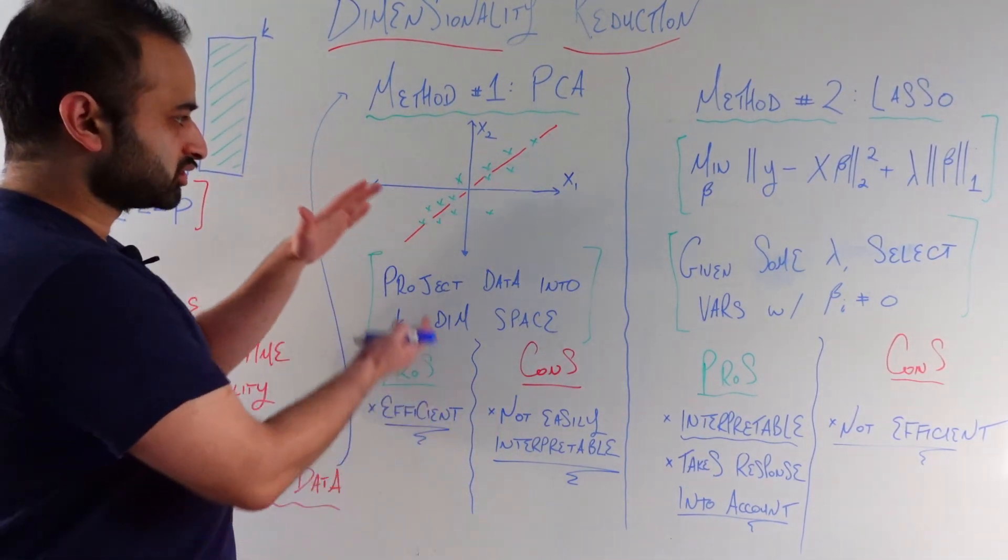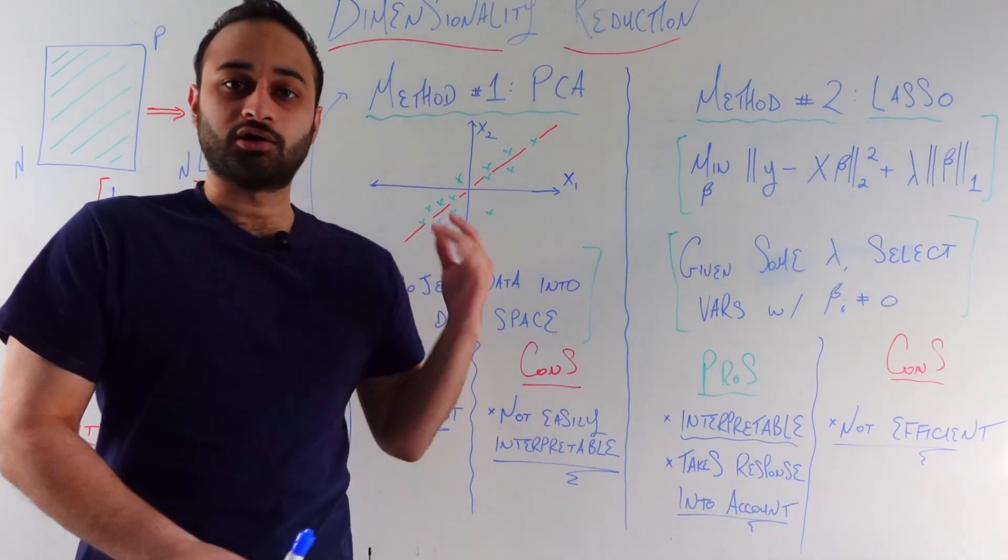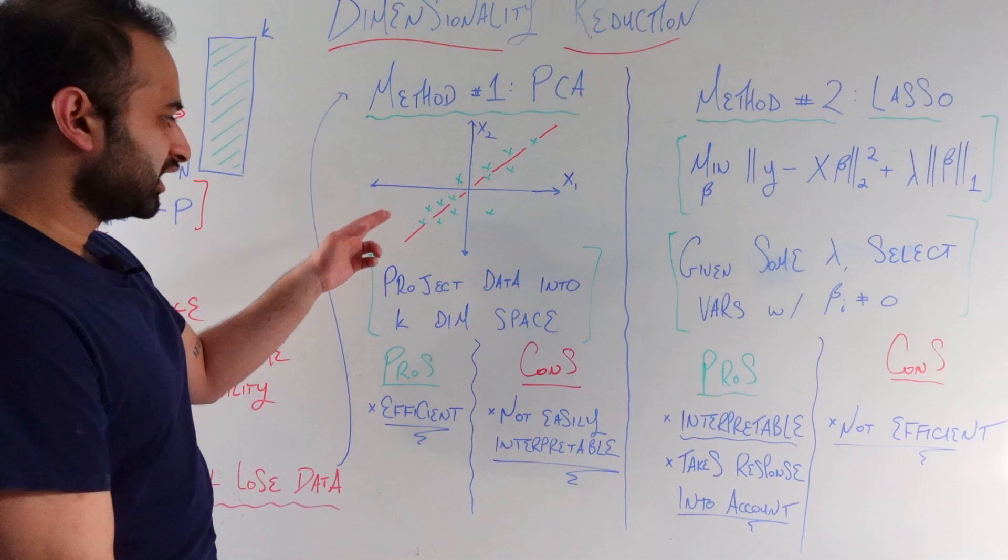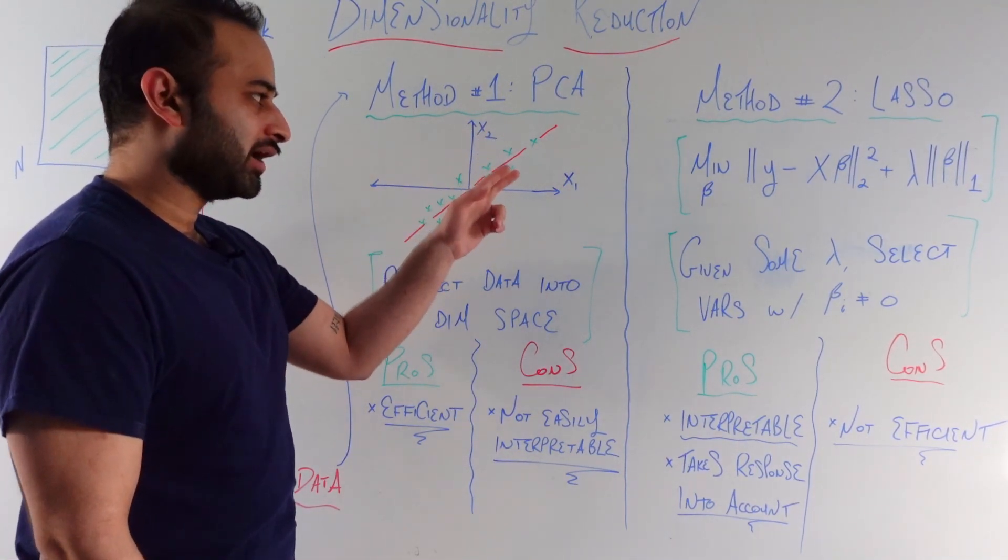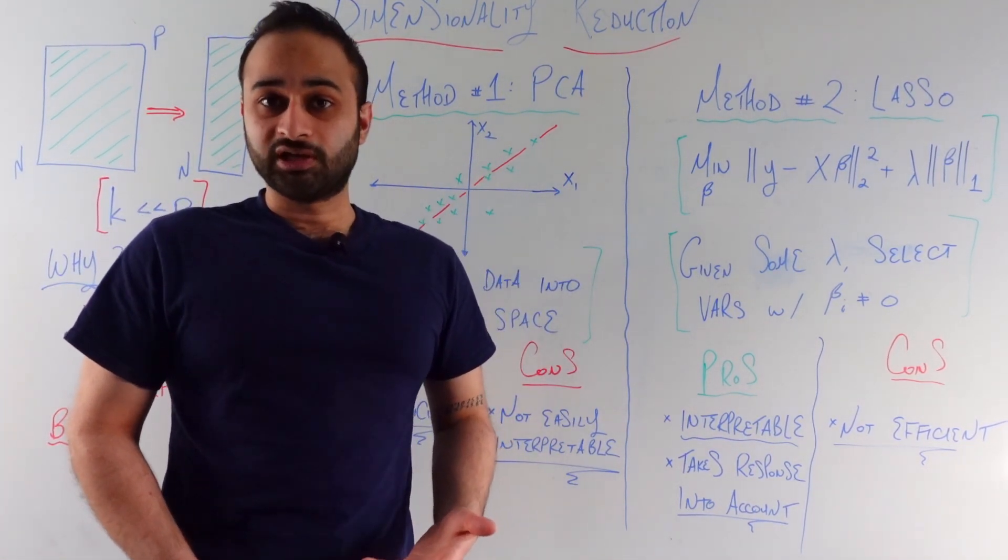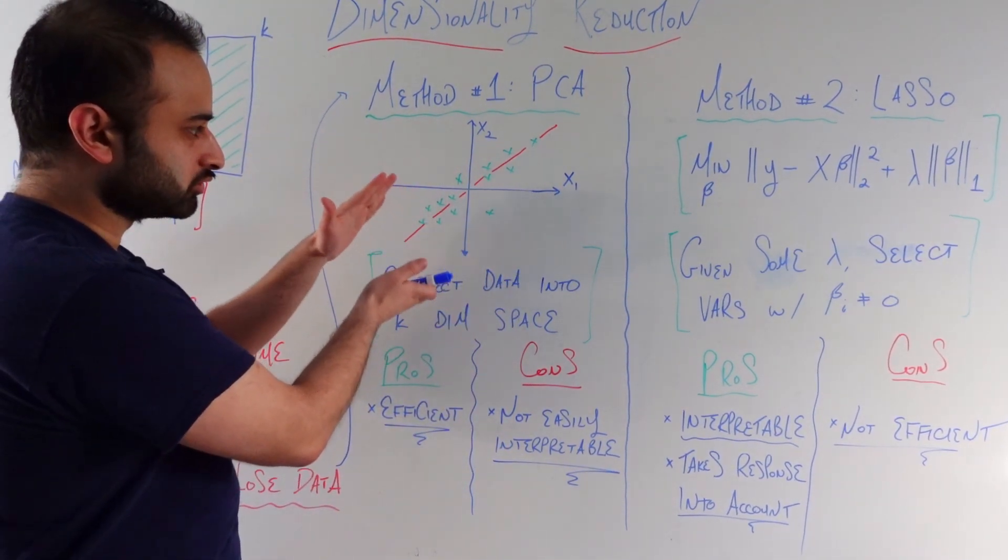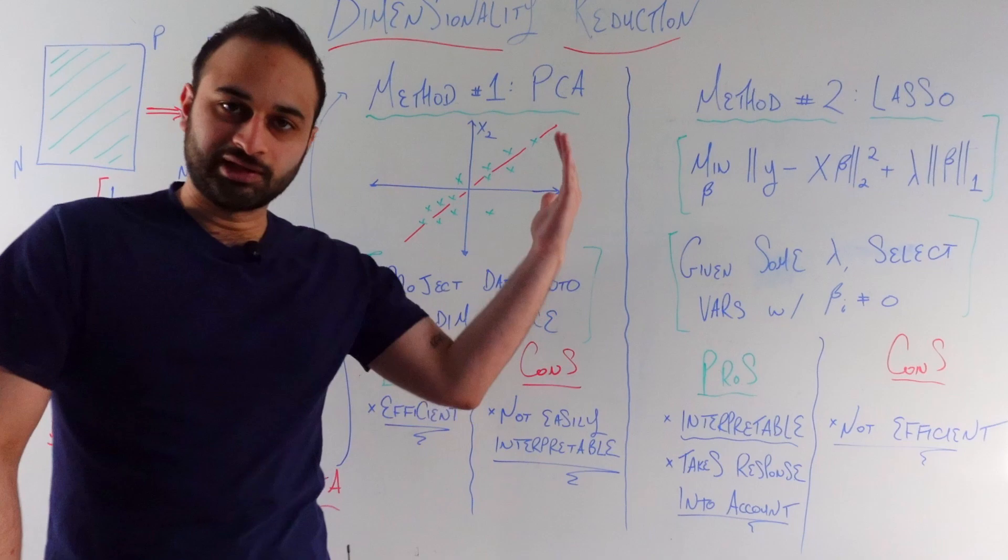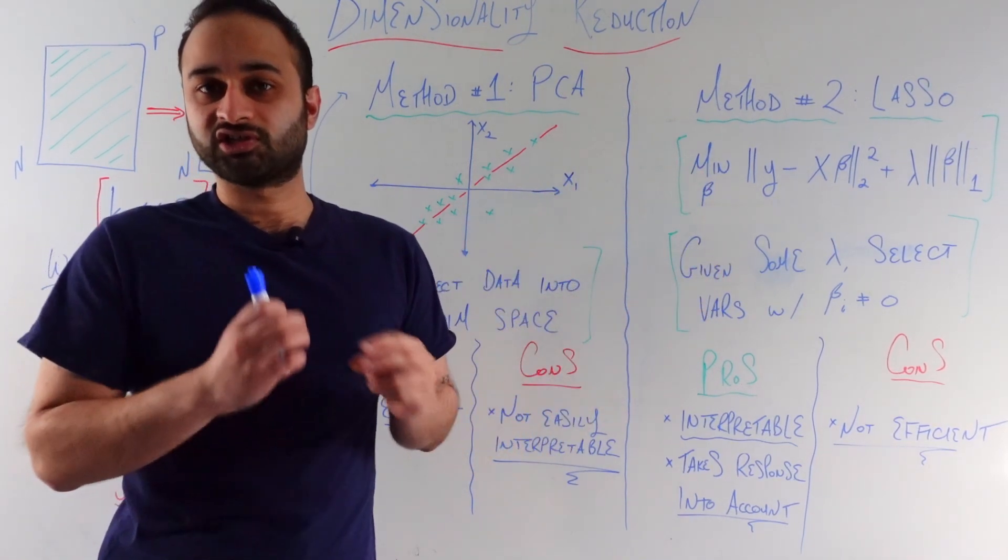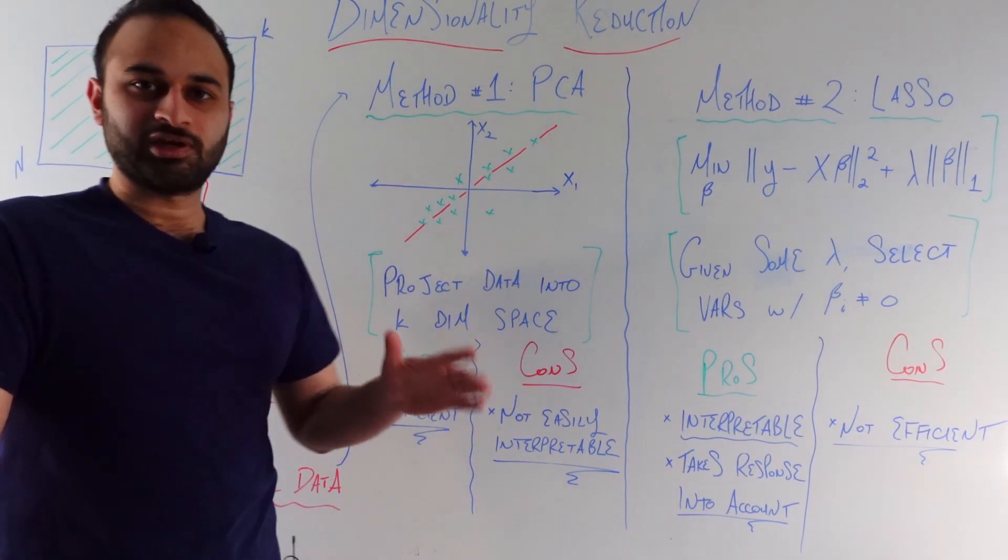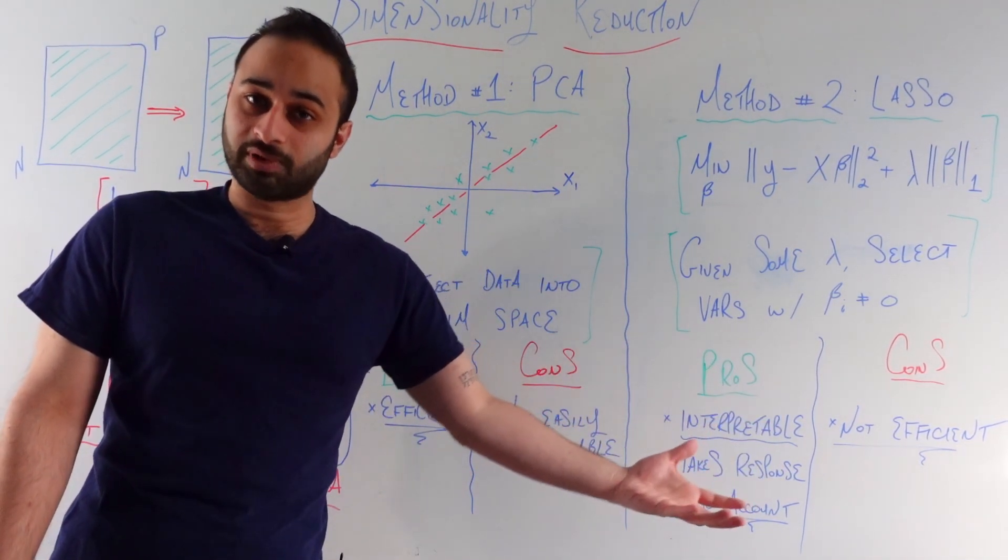And so we project them into a lower-dimensional space. In this case, we're projecting our two-dimensional data into a one-dimensional linear space. So you notice when you project these green x's onto this red line, you're still going to be losing some data because the projections are going to be basically smooshing them into this one-dimensional space. But because they already line up with the line pretty well, you're losing a very small amount of data. That's what's going on here. You're projecting your data into a k-dimensional space where k is less than the original number of dimensions.